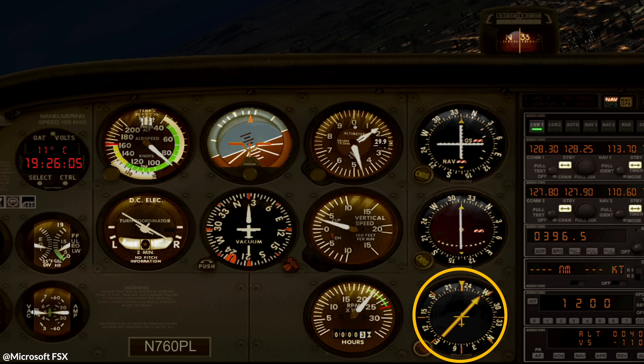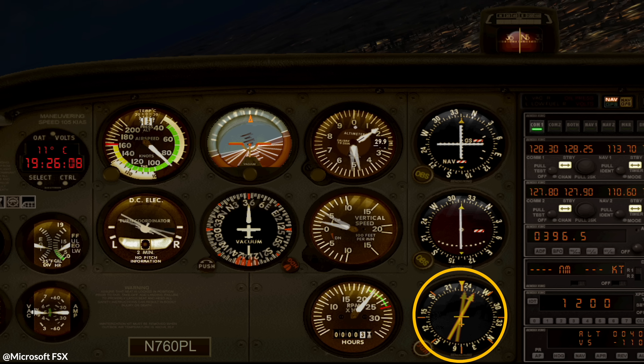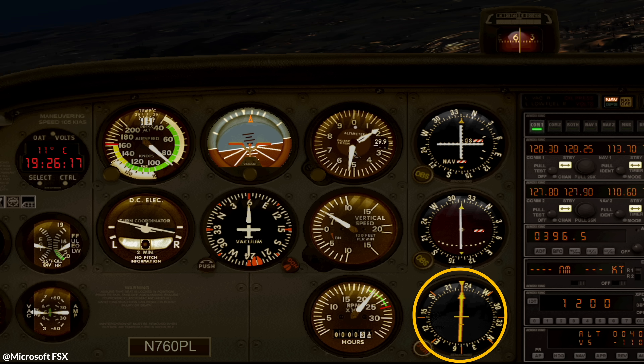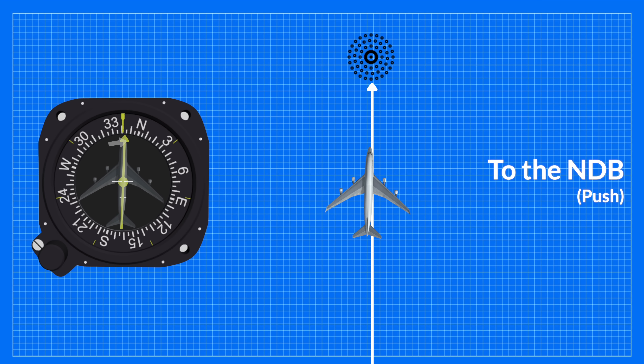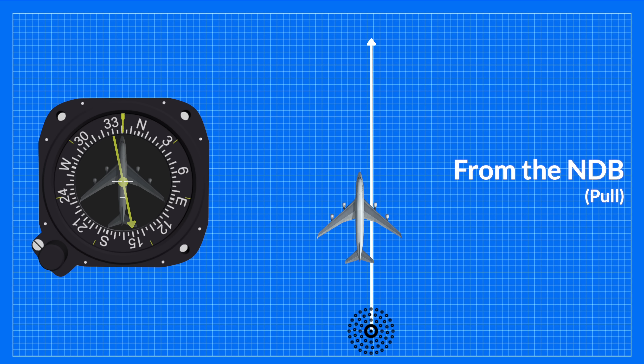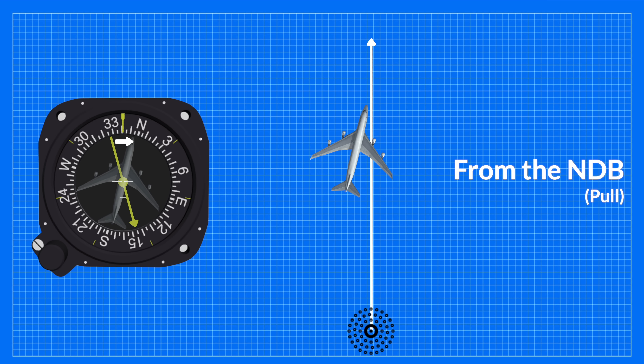To fly to the NDB, align your aircraft's heading so that the ADF needle points directly ahead on the relative bearing indicator. Another helpful mnemonic for correcting your course in a crosswind is 'push and pull the needle.' When tracking to the NDB, push the aircraft's heading toward the needle if it drifts to the side. Conversely, when flying from the NDB, pull the tail of the needle toward the desired track to keep the aircraft on course. This ensures you maintain an accurate bearing relative to the station — whether approaching or departing — even with wind interference.